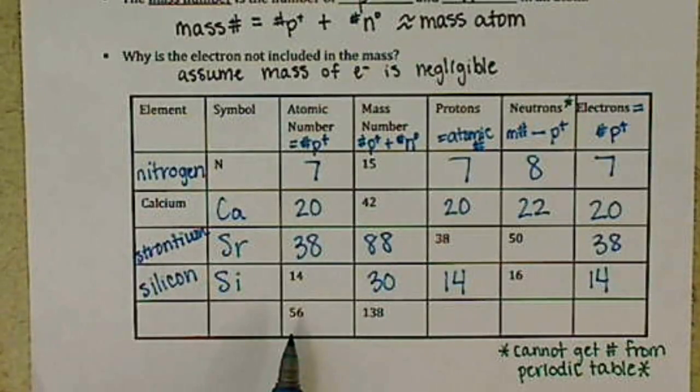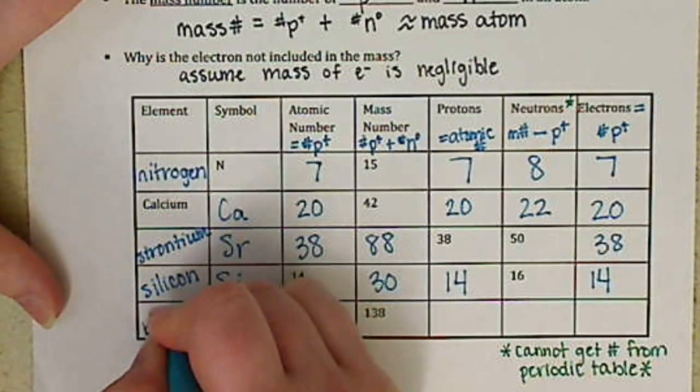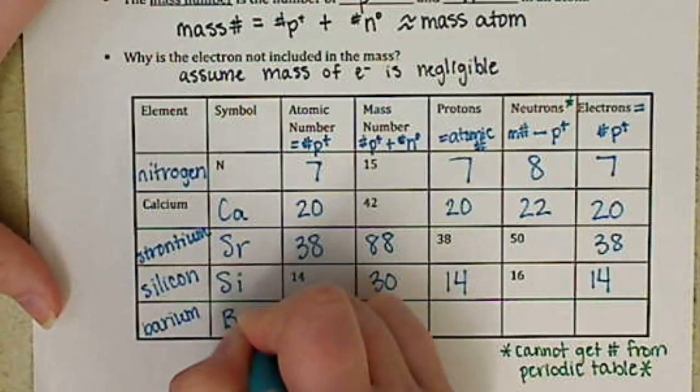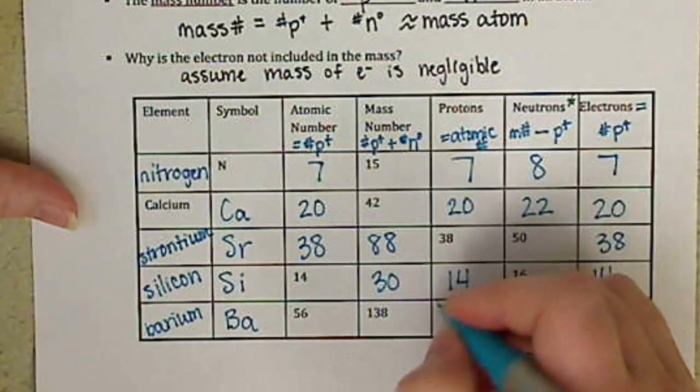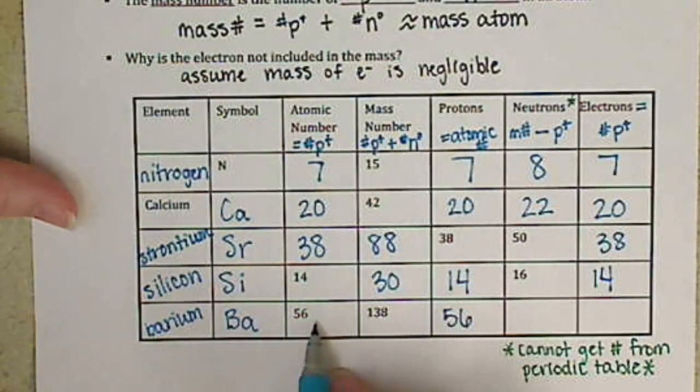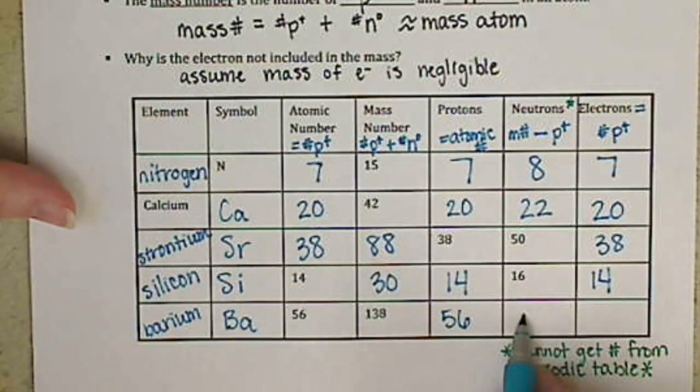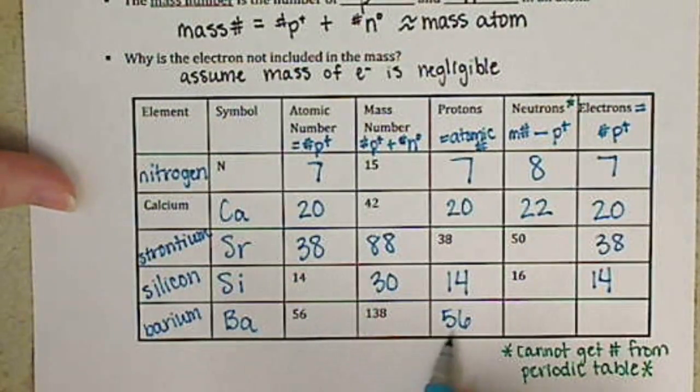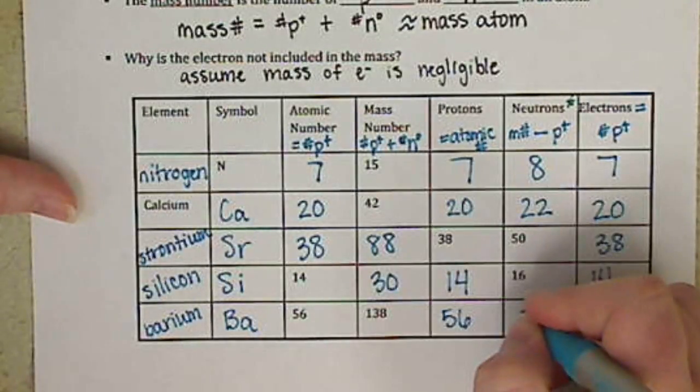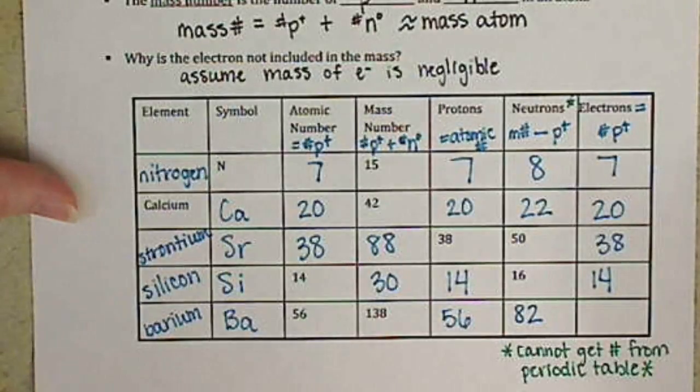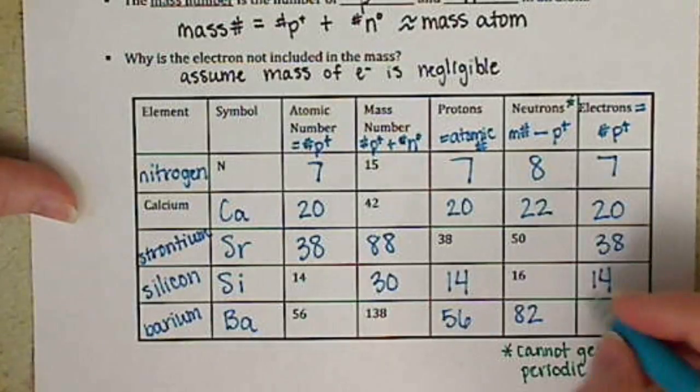And this is barium. Funny joke is what happens to a chemist after they die. You, barium. I'm so funny. All right. Protons. We have 56, same number of atomic number. Our neutrons. We take our mass number minus our number of protons. So barring my subtraction skills, would I have 82? I believe so. Our electrons, same as our number of protons, for 56.